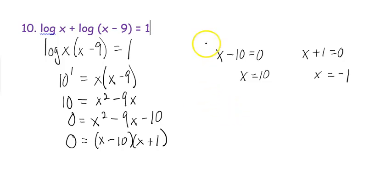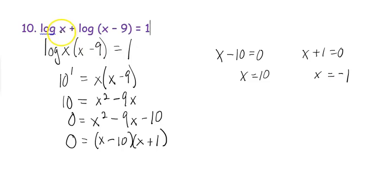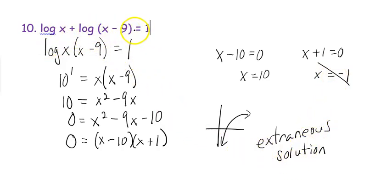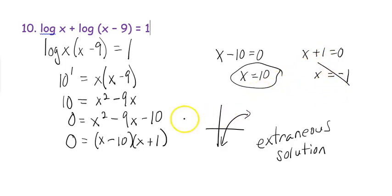This problem has an extraneous solution. You can't take the log of a negative number. If you plug in 10, the log of 10 and the log of (10 minus 9) are both valid. But if you plug in negative 1, you'd need the log of negative 1, which doesn't exist — the log graph only exists in the positive domain. So negative 1 is an extraneous solution, and the only real answer is x equals 10. This is the end of the notes.